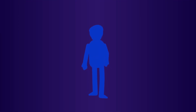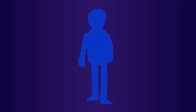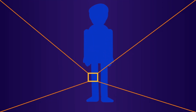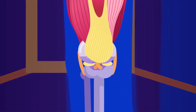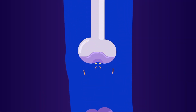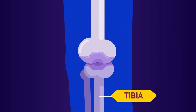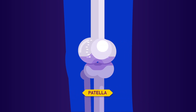To understand the torn ACL, we need to learn a little bit about the anatomy of our knee. Our knee consists of three bones: the femur, or thigh bone; the tibia, or our shin bone; and the patella, or the kneecap.